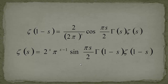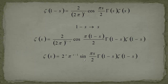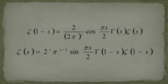We've arrived at zeta of s equal to 2^s · π^(s−1) · sine(π·s/2) · gamma(1−s) · zeta(1−s). Even more powerfully, we have the symmetric formula: zeta of (1−s) equals (2/(2π))^s times cosine(π·s/2) times gamma(s) times zeta(s). This concludes the video — I hope you had a lot of fun.